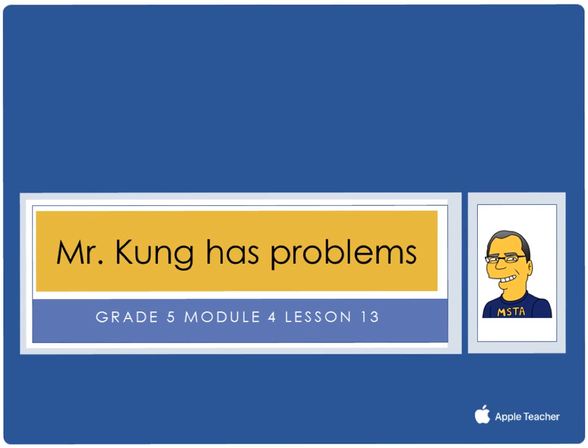Hello, and welcome to another episode of Mr. Kung Has Problems. Tonight in grade 5, module 4, we are on lesson number 13, and that means we are going to take our first crack at multiplying unit fractions by unit fractions. That's another way of saying this is our first time multiplying fractions at all, since these are the simplest of those types of multiplication problems. But I think we're going to find some models that will help us out, and you should have some success here on tonight's homework.